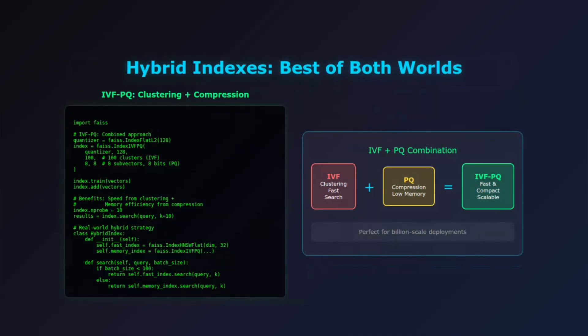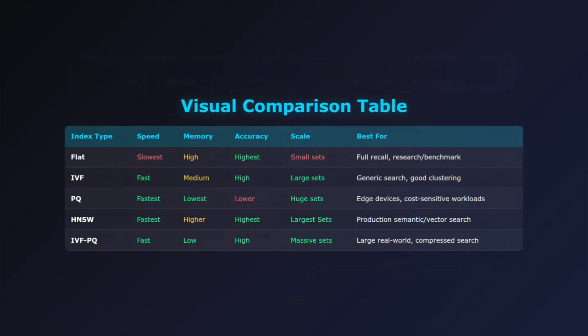Here's where it gets really interesting — you can combine these methods. IVFPQ is probably the most common hybrid approach, giving you the best of both worlds: the speed of clustering with the memory efficiency of quantization. It's perfect for massive datasets where both speed and memory matter. Other combinations include HNSW plus PQ for graph navigation with compression, or multi-index approaches that use different indexes for different query types.